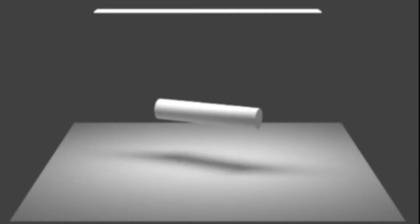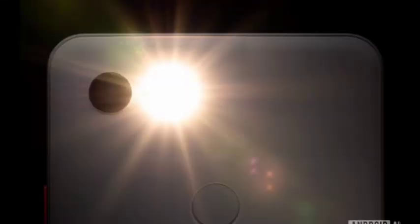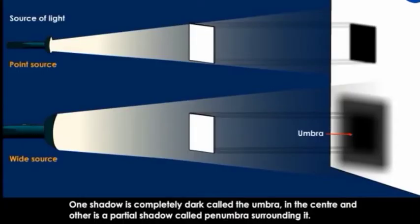To make it more clear, tube light is an example of an extended source of light. Bulb, flashlight are examples of point source of light. The shadow formed by a point source of light is called an Umbra.